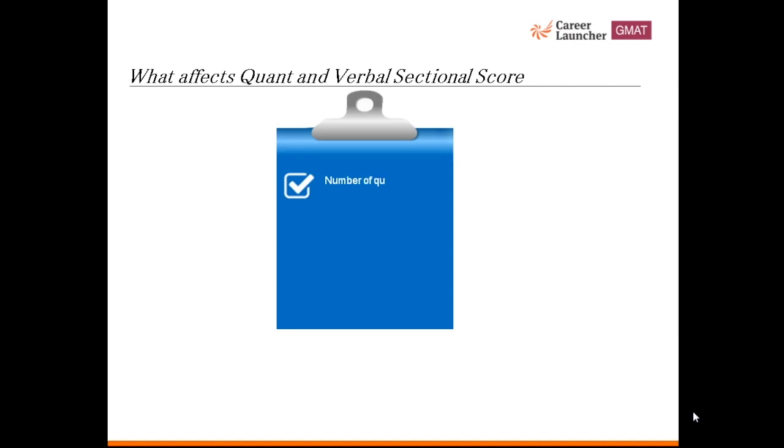First, number of questions you answer. Number of questions you do not answer. Remember the fact that not completing a section is heavily penalized by GMAT, so take a calculated guess instead of skipping a question. Then whether your answers are correct, and the last one where things become a little tricky is the difficulty level of the questions that the test gives you.